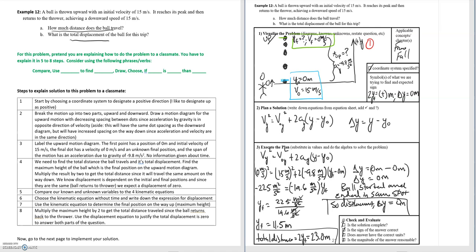Then in step 2 we're asked to break the motion up into two parts upward and downward. Draw a motion diagram for the upward motion with decreasing spacing between dots since the acceleration due to gravity is opposite the direction of velocity. So looking at these spacing of the dots we have a decreasing spacing as we're going up. So we're good there and this is our motion diagram for the upward direction. So we'll label that.